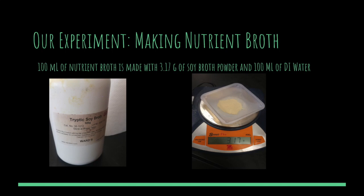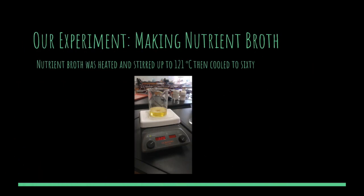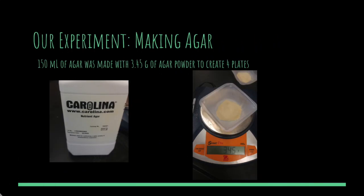A 100 ml nutrient broth was made with 3.17 grams of soy broth powder and deionized water. This mixture was then heated to 121 degrees Celsius and stirred on a hot plate. After it reached this temperature, it was taken off the hot plate and allowed to cool to 60 degrees Celsius to avoid burning and killing the bacteria. Agar was simultaneously prepared using 3.45 grams of agar nutrient powder and 150 ml of deionized water to make gel for 4 plates.